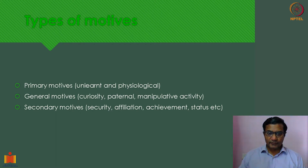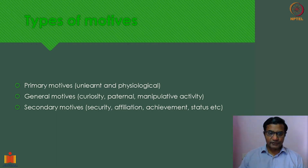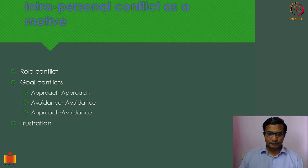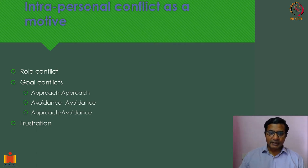We also looked at different types of motives — motives being the reasons behind a particular behavior. These factors can be classified into three types: primary motives, which are inborn or physiological; general motives, which are partially inborn and partially social; and secondary motives, which we learn from society. We also looked at conflict as a motive — sometimes a negative irritant or conflict can drive behavior.